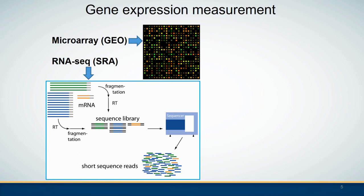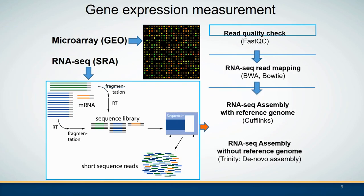RNA-seq is a so-called next-generation sequencing technology. After we get the sequenced short reads, computational tools are needed to analyze the high-throughput dataset. To get the gene expression data there are mainly three steps: read quality check, and if your data pass the quality check, you are ready to do mapping and assembly. If you have a reference genome, you can use Cufflinks to do RNA-seq assembly, but when you do not have a reference genome, a de novo assembly needs to be performed.